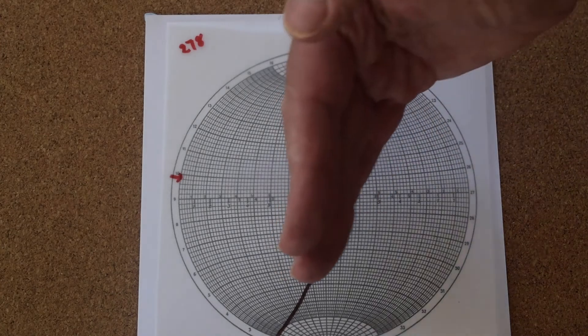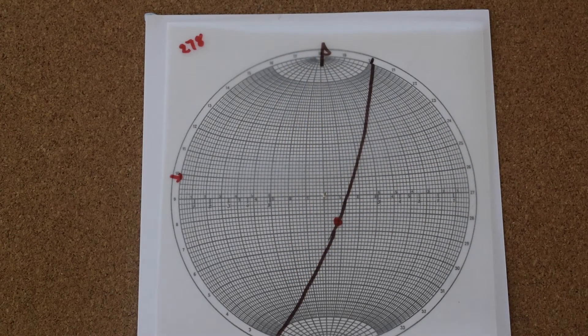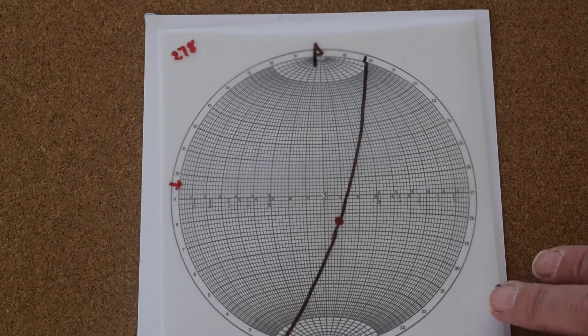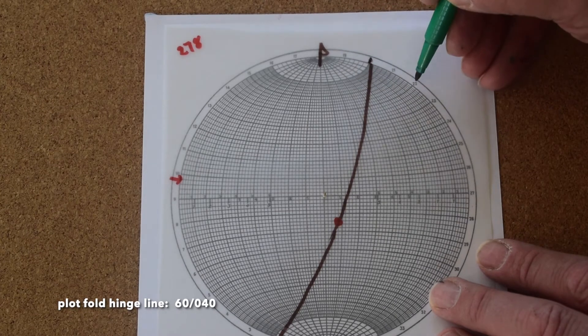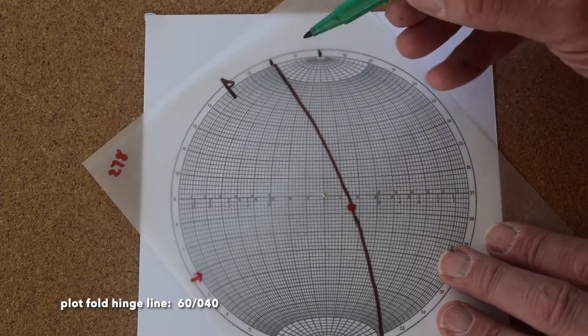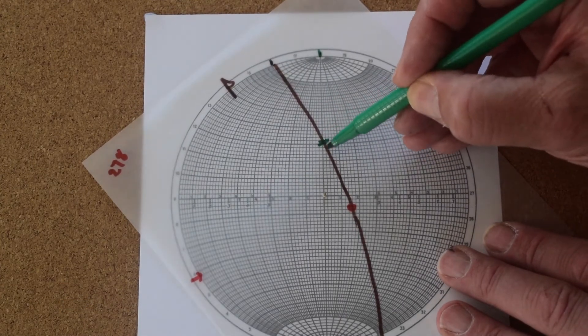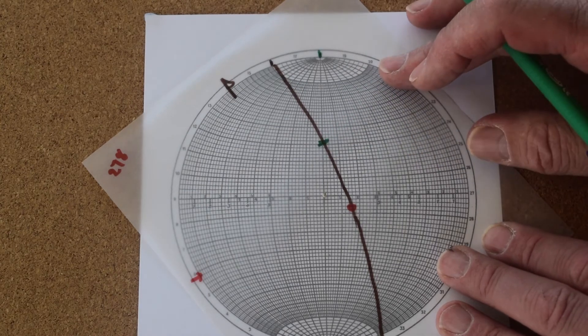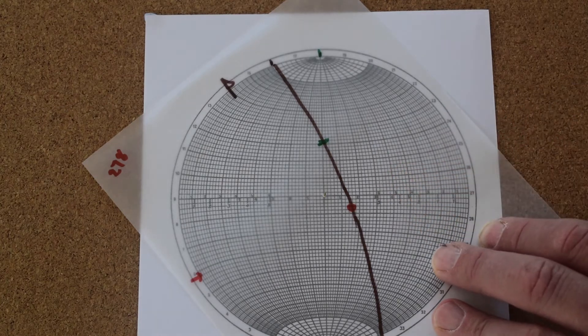Well let's imagine this bed is actually on a fold limb and that fold has got a plunge of 60 degrees towards 040. So let's find where that is. 10, 20, 30, 40, 60 degrees towards 040. So that's where our fold hinge is.